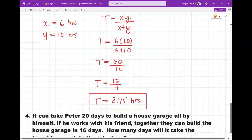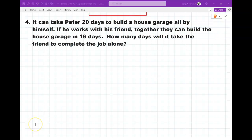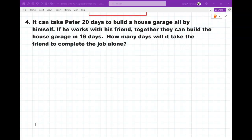Alright, one more of these things. And then, we're done with the lesson. I'm going to pause it. Alright, so, the last question here. It says, it can take Peter 20 days to build a house garage all by himself. If he works with his friend, together they can build a house garage in 16 days. How many days will it take the friend to complete the job alone? So, this time, we're trying to find the value of a person. The time for a person, not a time together. We know the time together is 16. We know that Peter can do it in 20. So, how long does it take the friend to do it by themselves?